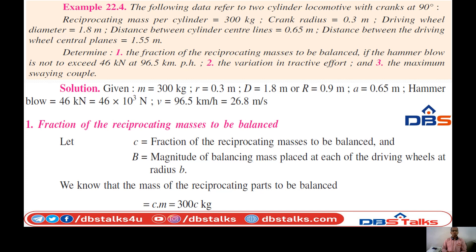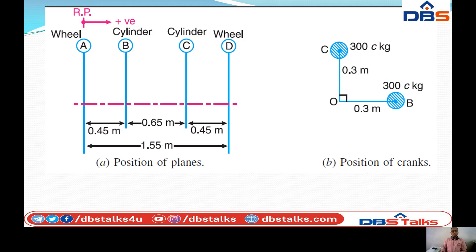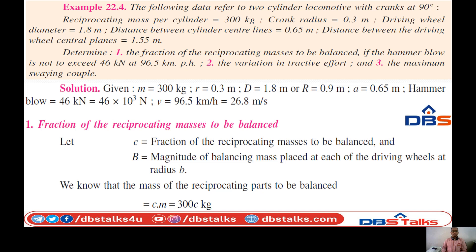Writing down the given data: m equals 300 kg per cylinder, crank radius r equals 0.3 meters, driving wheel diameter D equals 1.8 meters so capital R equals 0.9 meters. From the locomotive diagram drawn in the last class, the center cylinder lines gap is 0.65 meters.